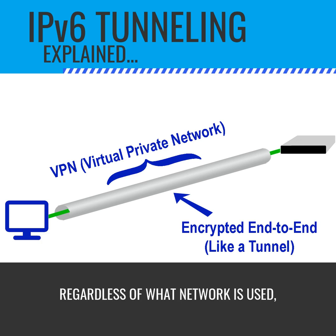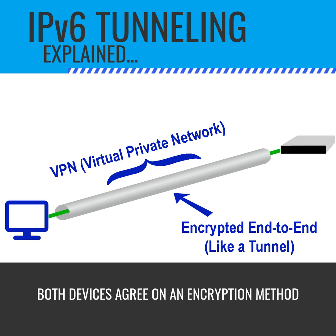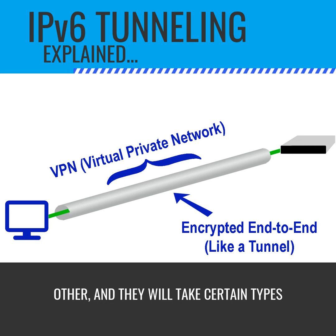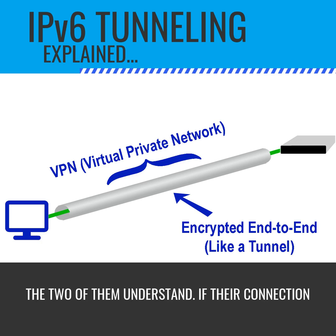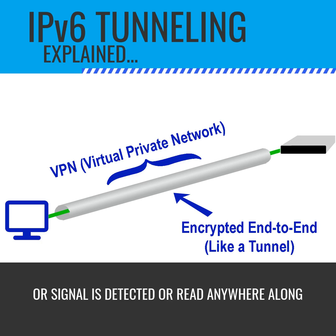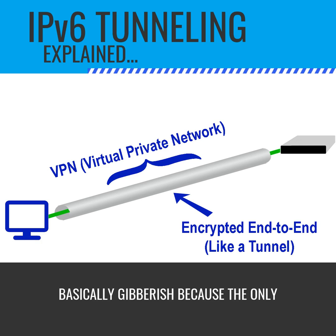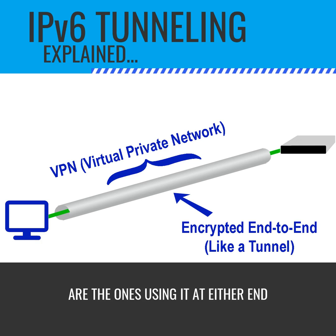Regardless of what network is used, the two devices — again, typically routers or Layer 3 devices — both agree on an encryption method for sending information to and from each other. They will take certain types of data and encapsulate it into that encryption type data that only the two of them understand. If their connection is detected or read anywhere along the way, it's basically gibberish, because the only two devices that know how to encrypt it are the ones at either end of the connection.